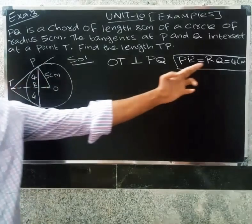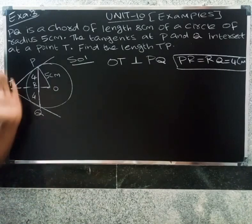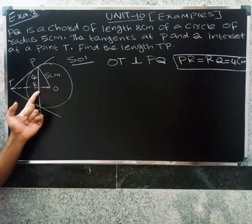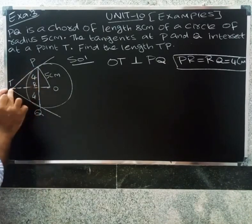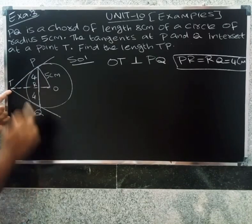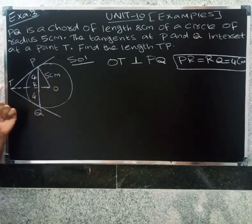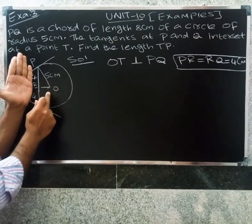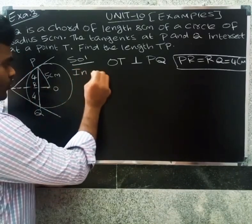The question involves a triangle. We apply Pythagoras theorem. In triangle BOR, we can use Pythagoras theorem. Then in the second triangle, we can also apply Pythagoras theorem. So we deal with two triangles.